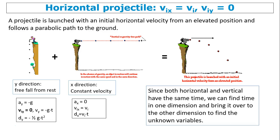Horizontal projectile means VIX equals VI and Viy equals 0. A projectile is launched horizontally from an elevated position and follows a parabolic path to the ground. A horizontally launched projectile equals free fall from rest, plus motion in the horizontal direction with constant velocity. These two added together give you a parabolic path.